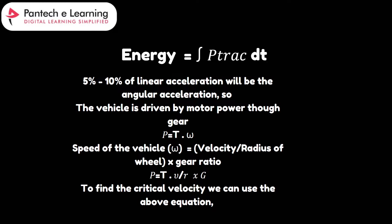First we have to understand the power formula. Power equals torque multiplied by omega. Omega is the speed of the vehicle. T is the torque produced by the motor — a measure of its rotational force. Omega is the angular velocity of the motor shaft, representing its rotational speed.